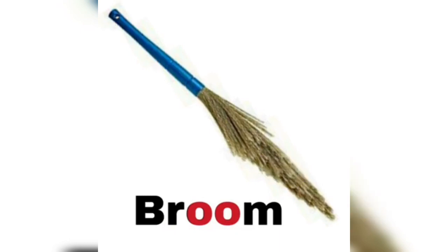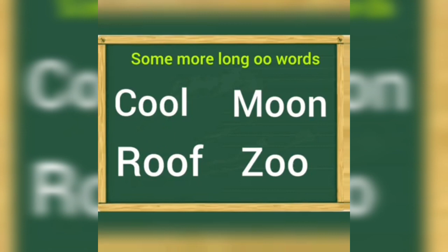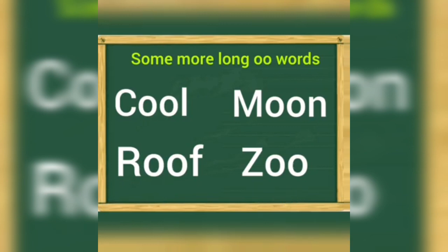Here are some more long OO words. Children, repeat after me. OO-K: Cool. OO-M-N: Moon. OO-R-F: Roof. OO-Z: Zoo.